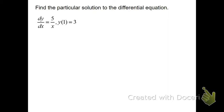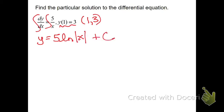So first of all, this is sometimes how they give you that point. This just means it goes through the point 1, 3. No big deal. Find the particular solution. That means integrate both sides. So we get y equals the integral of the right side. This is the natural log. So 5 natural log of x plus c.